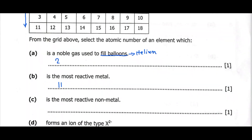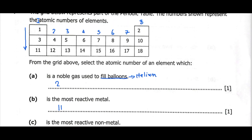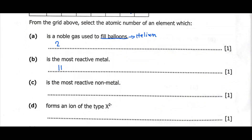C is the most reactive non-metal. The most reactive non-metals are those in group 7. The trend in group 7 is opposite to that of group 1 — the reactivity increases as you go up. So atomic number 9 is more reactive than 17. So we put 9 here.